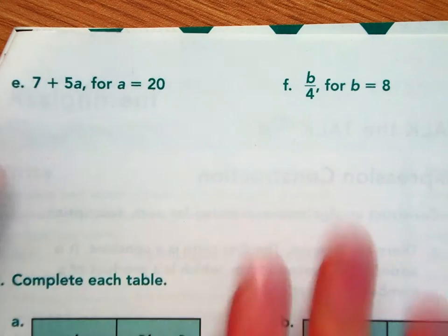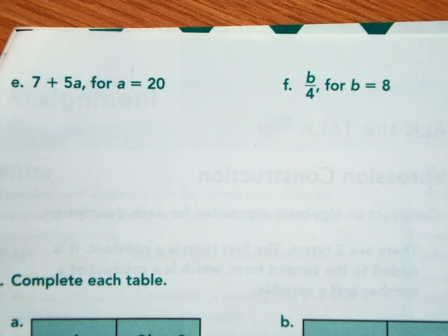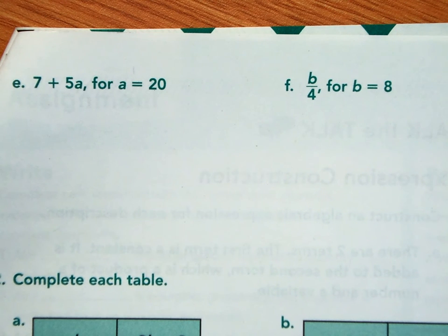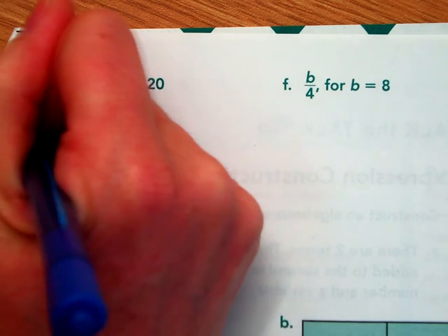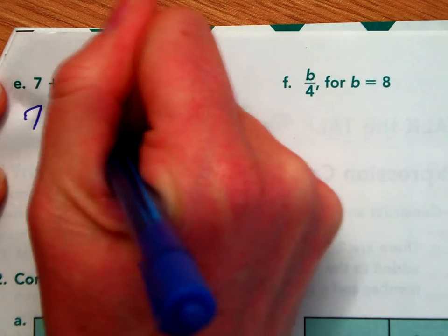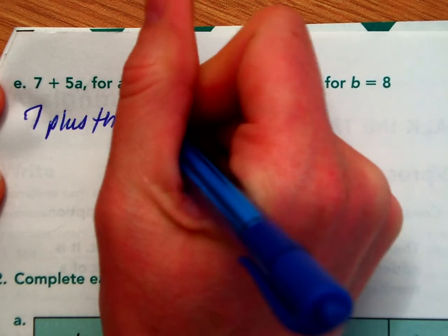Okay, two more similar. Pause the video. Try out E and F. All right, let's evaluate for E and F. First, let's translate it into words. Here's 7 plus the quantity 5 times A. 7 plus the quantity 5 times A.